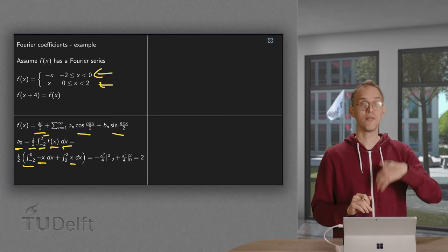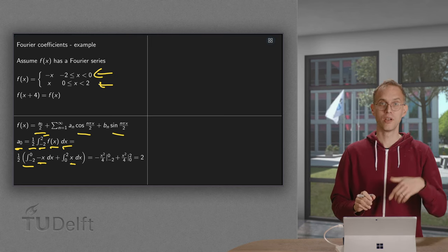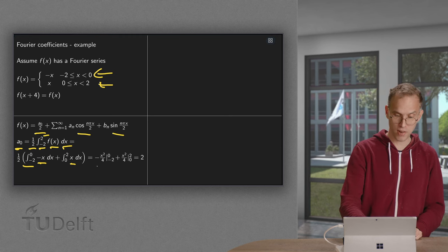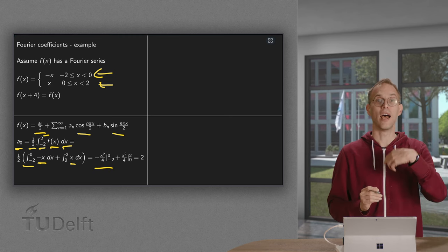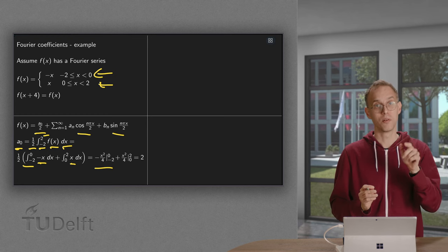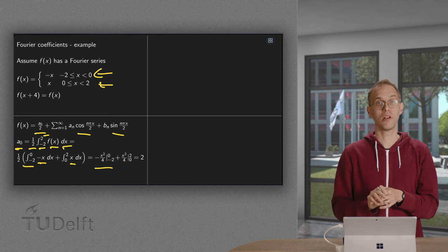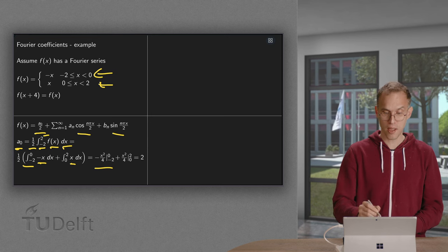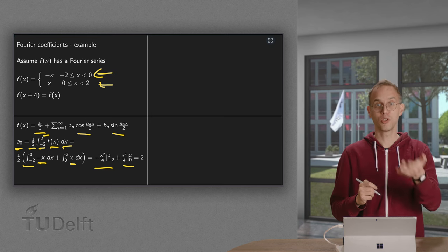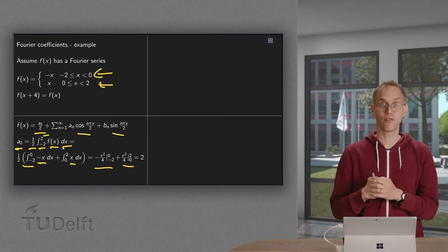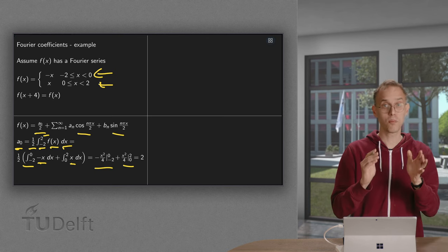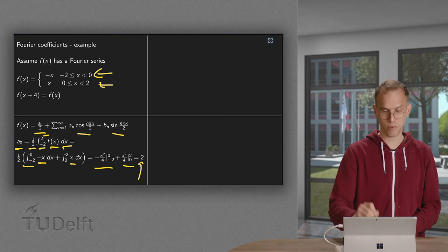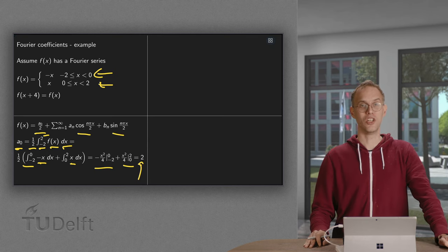Then we compute the antiderivative. We get minus x squared over 4, and between the boundaries 0 and minus 1, with the additional minus from the lower boundary we get a plus 1. The other one gives us x squared over 4, between the boundaries we get 1 minus 0. So we got 1 plus 1 equals 2. So there we have a0.